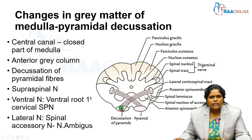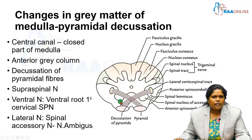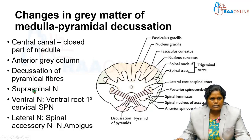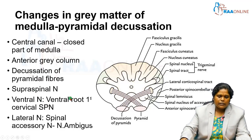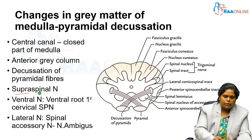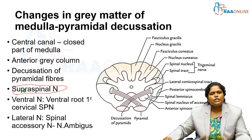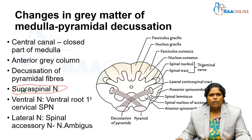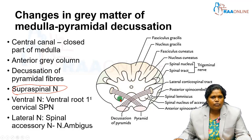Here you should understand that the pyramidal fibers are decussating. Because of this decussation, part of the anterior gray horn becomes detached, and that detached part is known as the supraspinal nucleus. Remember: the supraspinal nucleus is nothing but the detached part of the anterior gray horn.